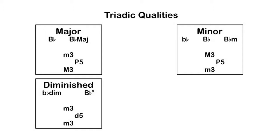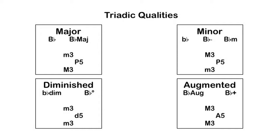Major, minor, and diminished triads are the three tonal triads — they show up diatonically, or without accidentals, in the major-minor tonal system. The fourth type of triad, the augmented triad, is somewhat rare in tonal music, mostly because it doesn't show up in the major-minor tonal system without using some type of accidental.